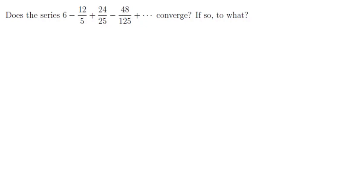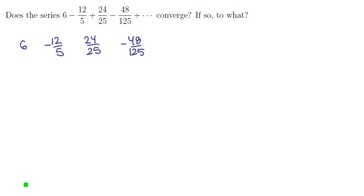Let's start by seeing if we can find a pattern in these terms, because we certainly don't want to add them by hand. We have 6, then minus 12 fifths, then 24 twenty-fifths, then negative 48 one-twenty-fifths. Notice that the denominators are pretty easy to figure out as we jump term to term — each time we're multiplying the denominator by 5, so times one-fifth, times one-fifth, times one-fifth all the way down.